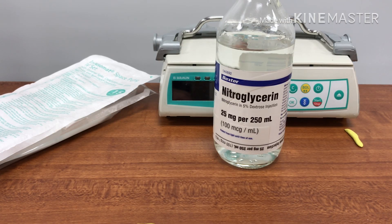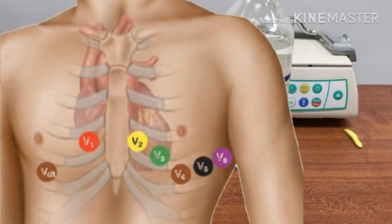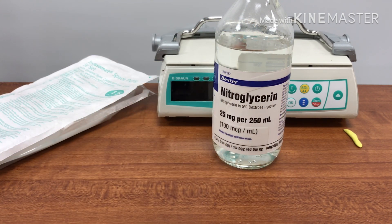For nitroglycerin in ST-segment elevation MI patients — specifically inferior MI — before administering any nitro, you need to perform a right-sided ECG to rule out right ventricular involvement. It's simple: once you've moved lead V4 over to the right side, run the 12-lead. If there's any ST-segment elevation greater than 0.5 millimeters in V4R, it is positive for right ventricular involvement.